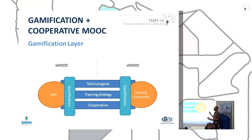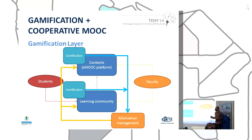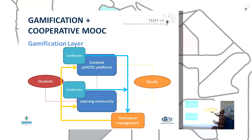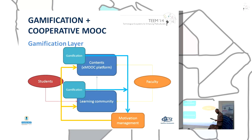The second layer is the training strategy layer, which refers to the instructional design of the course. The last one is the cooperative layer, which shows the outcomes and content generated through the cooperation of instructors and participants. The faculty contribute to the course by uploading their contents to the platform and to the learning community, but students only work in the learning community. The faculty then reflect on the community contributions for the next edition or during the current edition of the course.